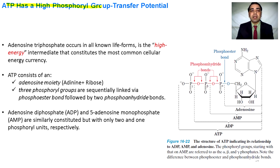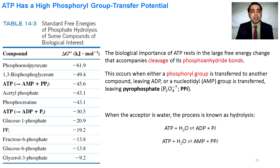ATP has a high phosphoryl group transfer potential. In the structure of ATP we can see the adenosine part and three phosphoryl groups connected through a phosphoester bond, with two phosphoanhydride bonds joining the three phosphoryl groups. The standard free energy changes of different high-energy molecules include phosphoenolpyruvate at −61.9 kJ/mol, acetyl phosphate at −43.5 kJ/mol, and glucose-1-phosphate at −20.9 kJ/mol. ATP is hydrolyzed to produce ADP and inorganic phosphate, and can also produce AMP and pyrophosphate.